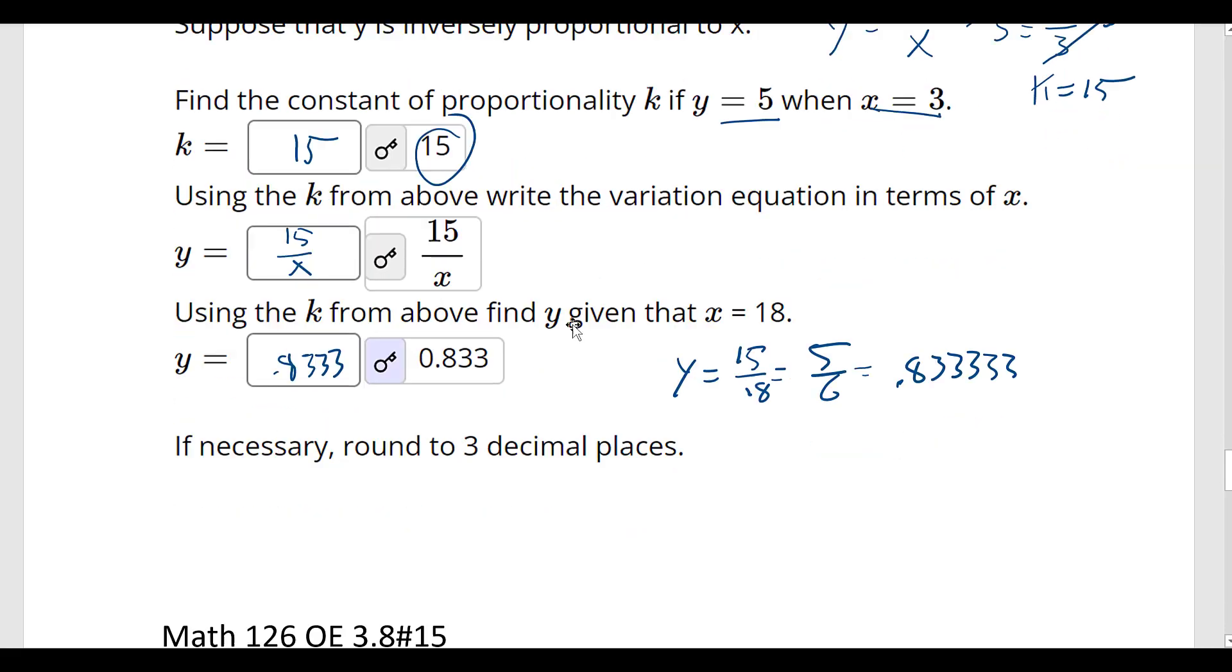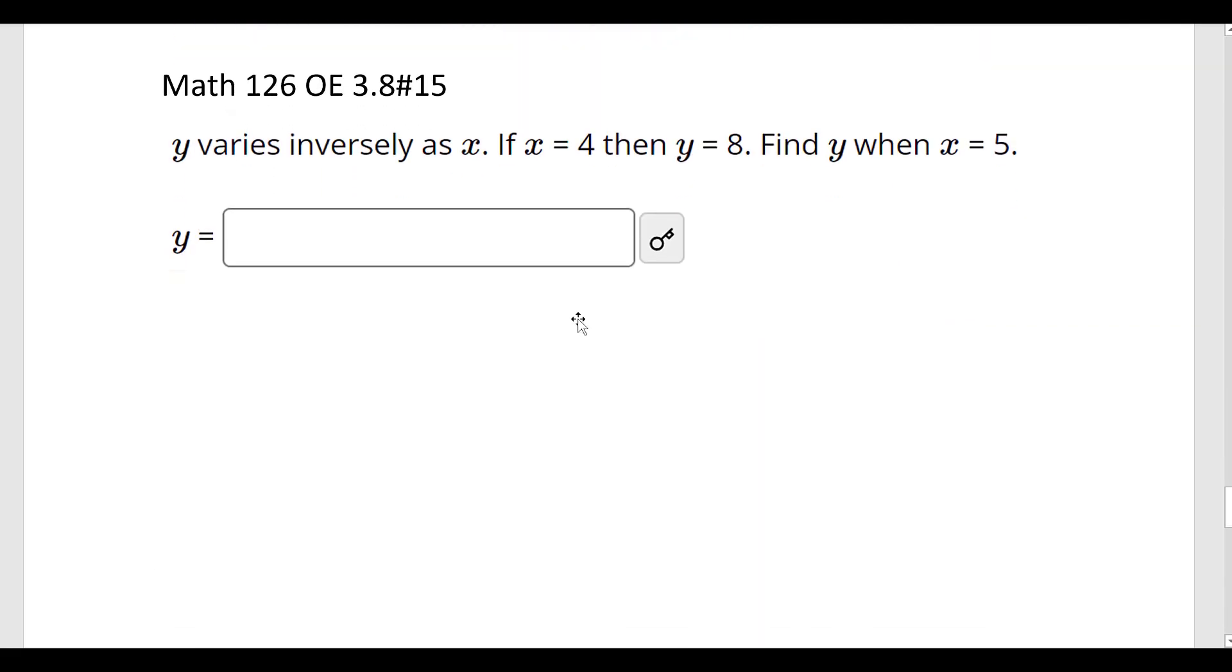Okay, moving on to number 15. Y varies inversely as x. So again, y equals k over x. If x is 4, then y is 8. So 8 equals k over 4. We multiply by 4 to find our k. So k would equal 4 times 8 is 32.